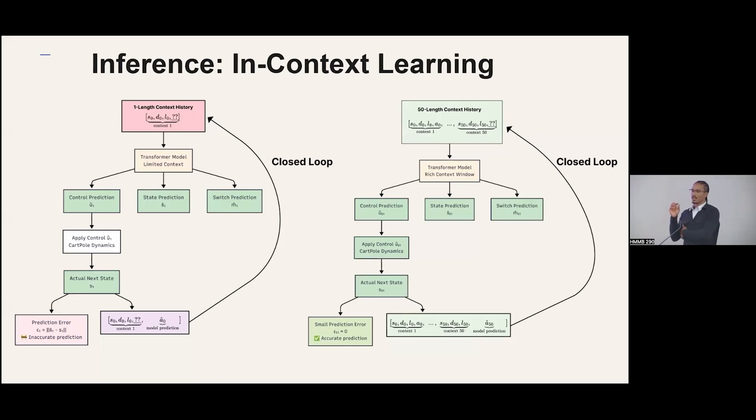So in-context learning in our system specifically, and especially in closed loop, is shown here. So if you look at the context 50, we have our context, and then we have up to the 50. And as I said, it predicts the control action, but that control action is then put into the sequence, and that entire sequence is then given back to the model. So not only is it able to learn from that initial context to make that first control action, but that control action, the first one, will have a small error because it's able to see the entire context history before that.